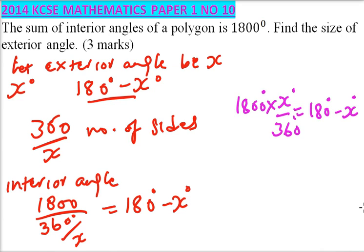So you can divide here. 1800 divided by 360 gives 5, so you have 5X equals 180 minus X.